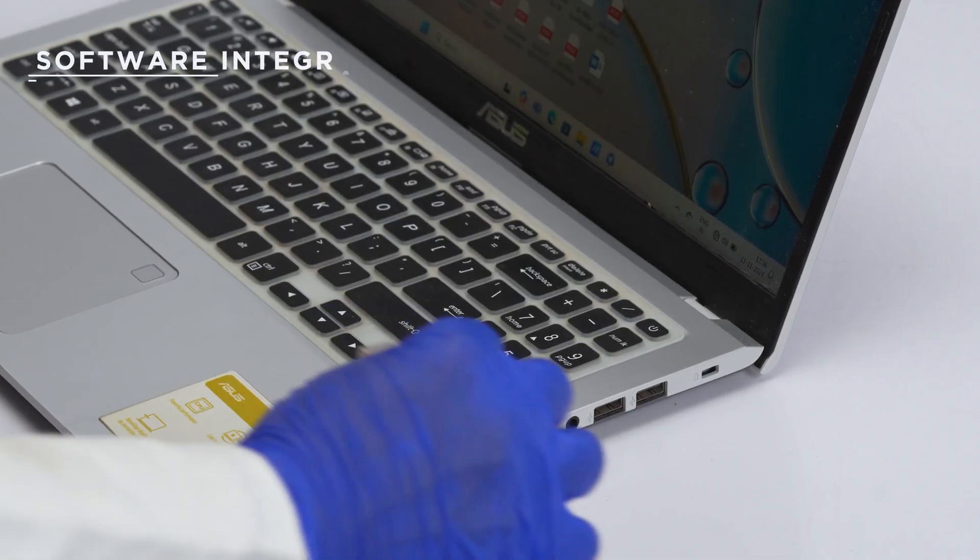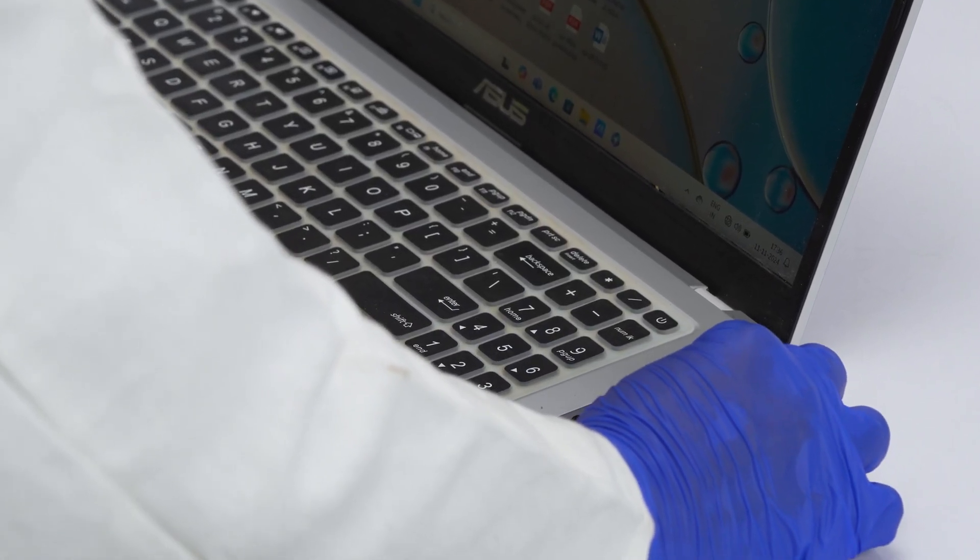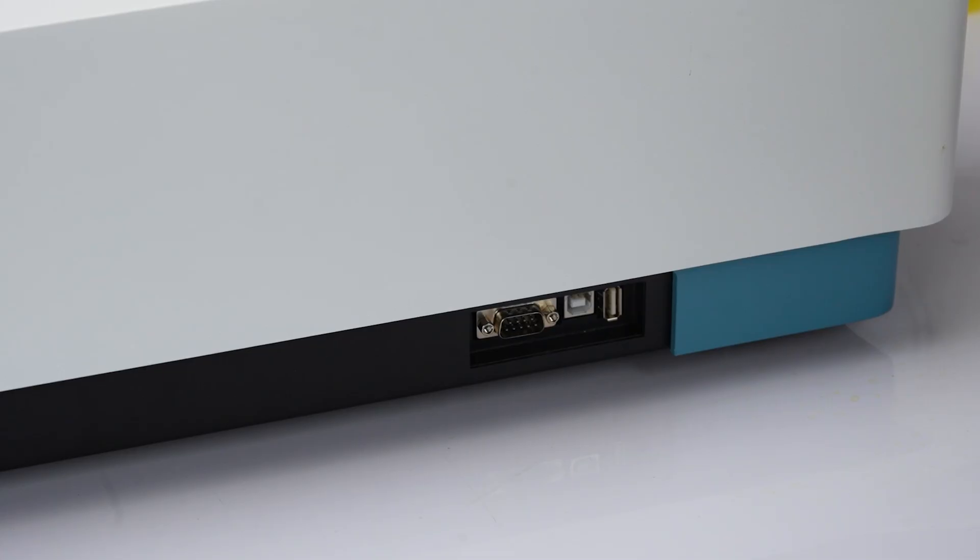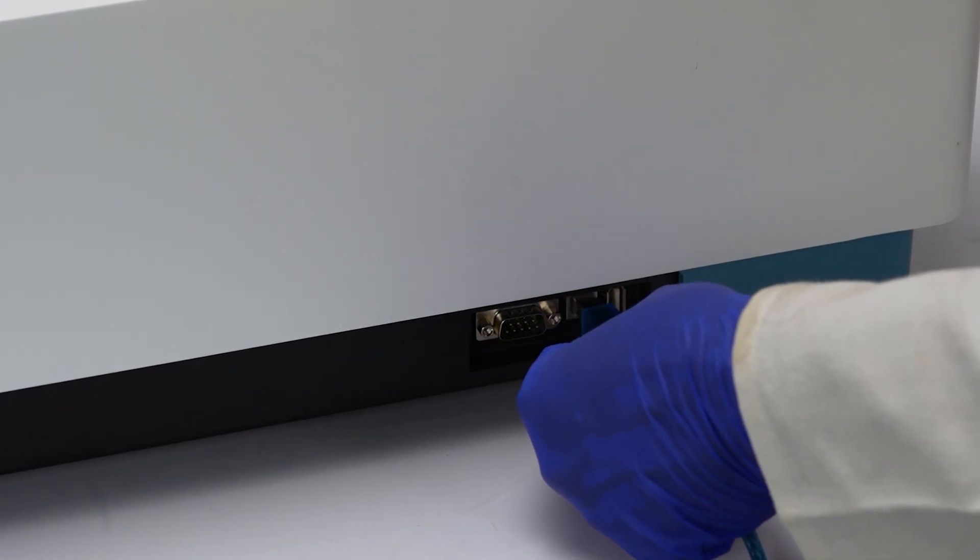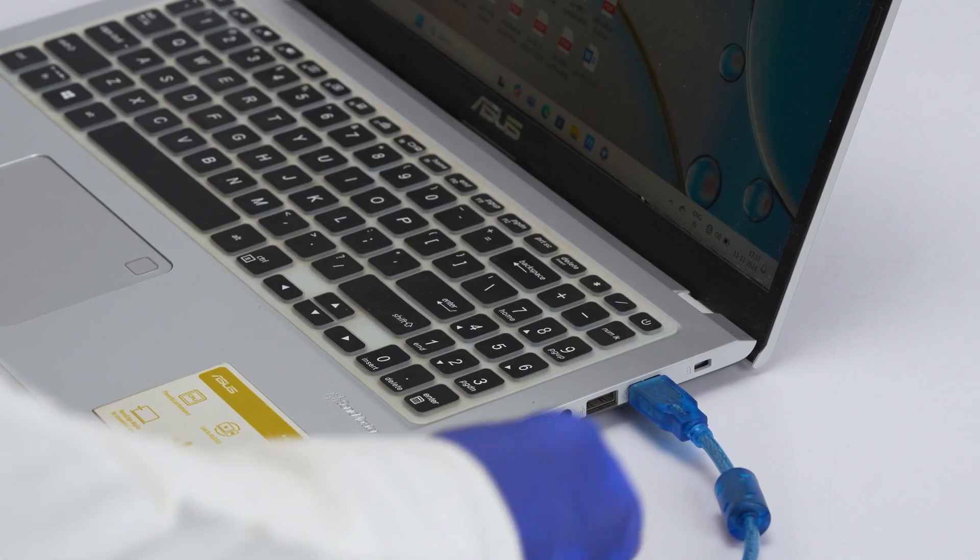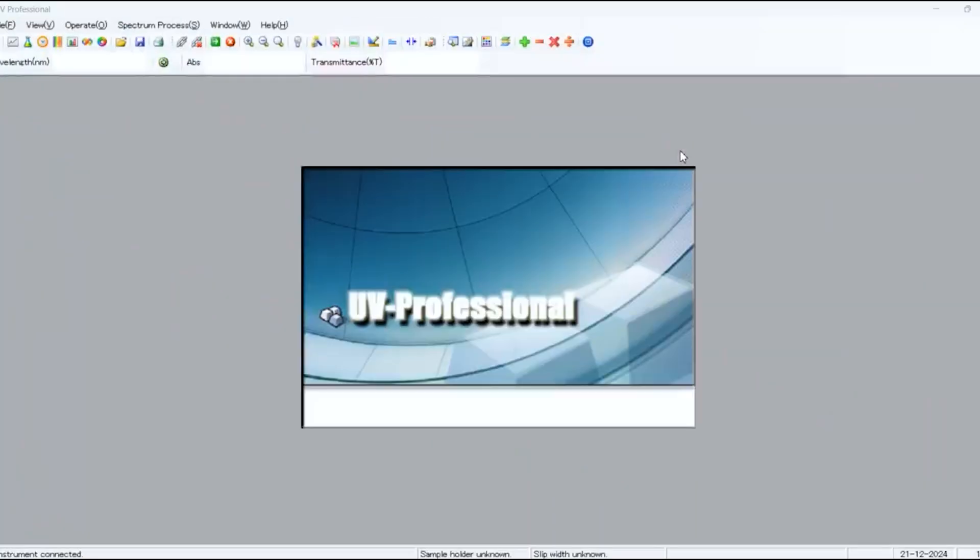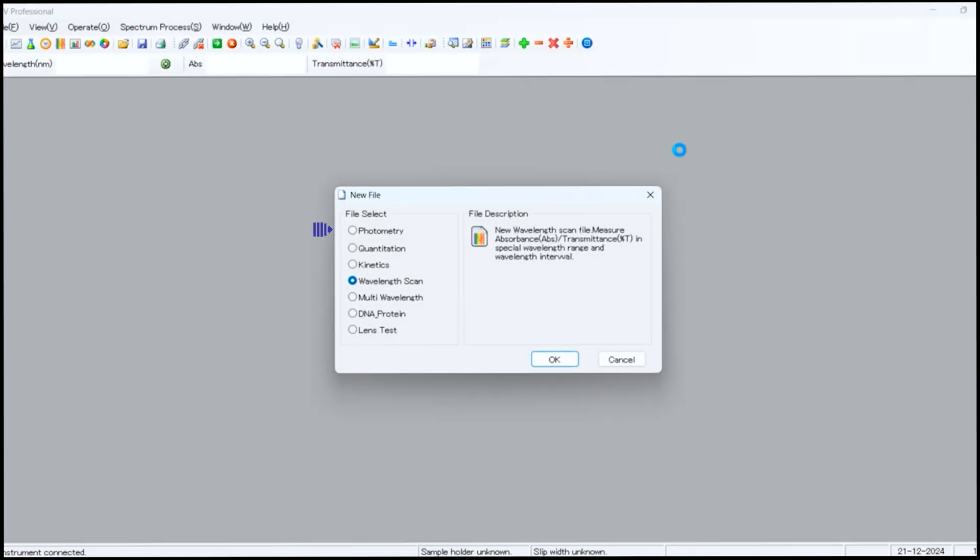Connect the UV1950 to your computer using the connection cable. Insert the dongle key. The software interface provides additional options including photometry, quantitation, kinetics, wavelength scan, and multi-wavelength DNA and protein analysis. All these tools are also accessible via the toolbar.